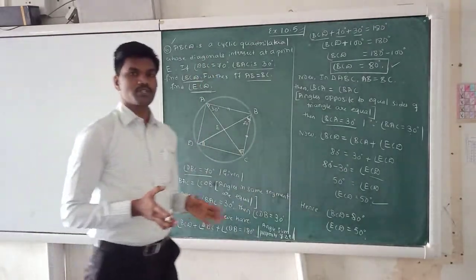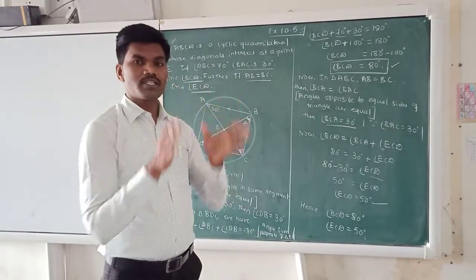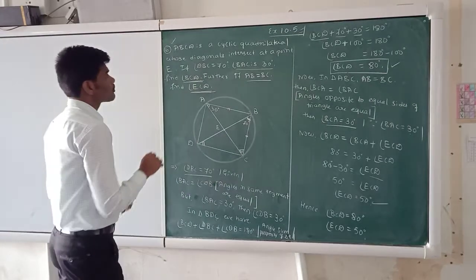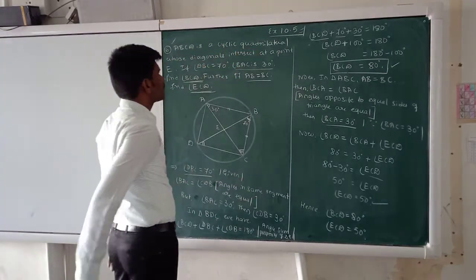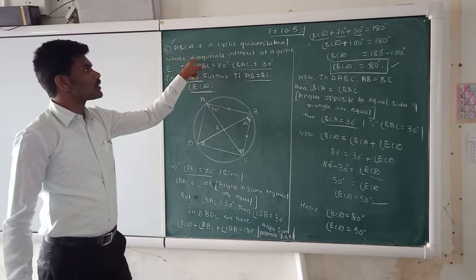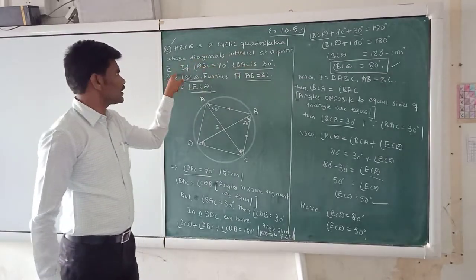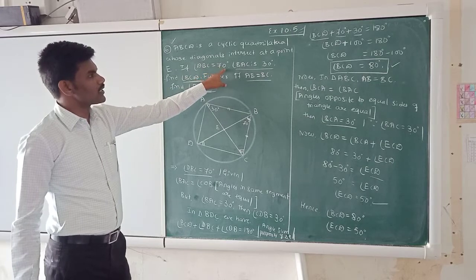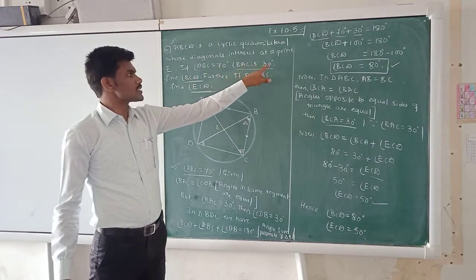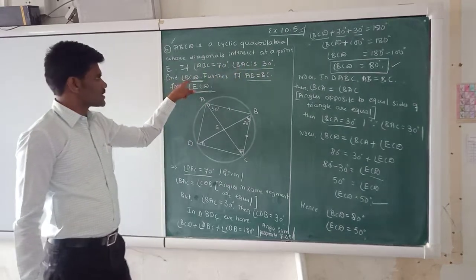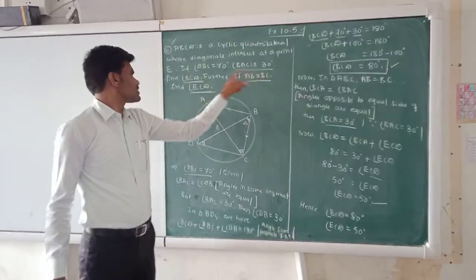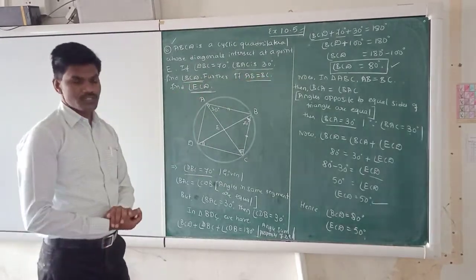So, understand the question. If you understand the question, it is half done. So, what is the given problem? ABCD is a cyclic quadrilateral whose diagonals intersect at a point E. If angle DBC is equal to 70 degrees, angle BAC is 30 degrees, find angle BCD. Further, if AB is equal to BC, find angle ECD also.